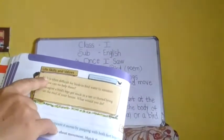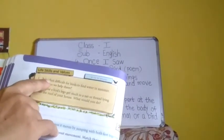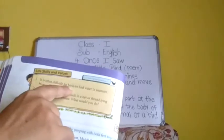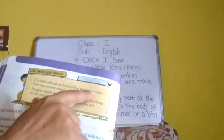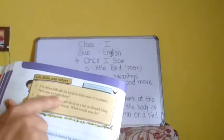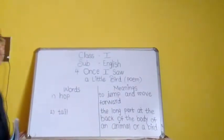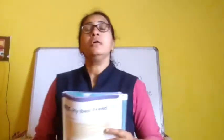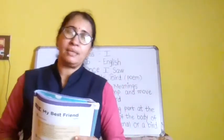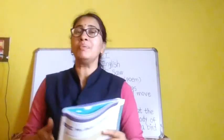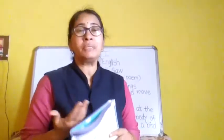Children, on page 34 you can see life skills and values. It is often difficult for birds to find water in summer. How can we help them? Children, that is a big problem for anyone, for human beings also to find water in summer season.